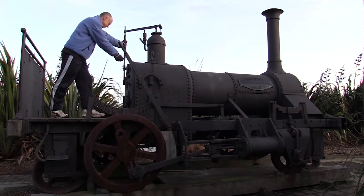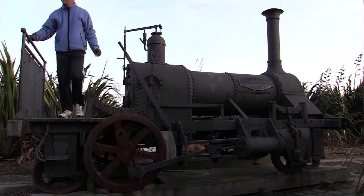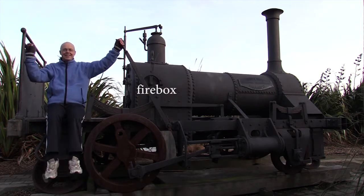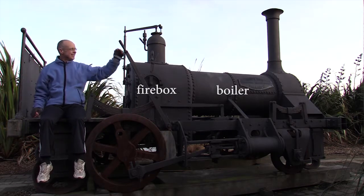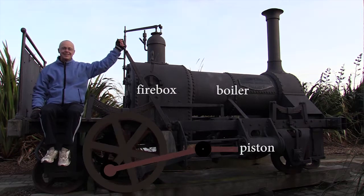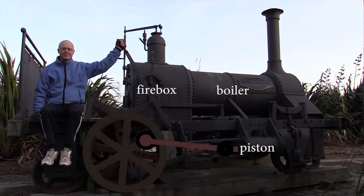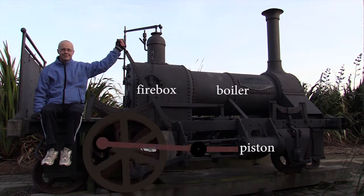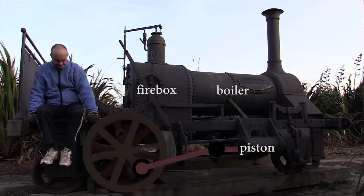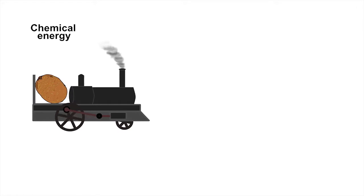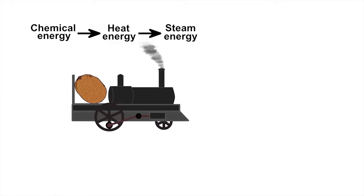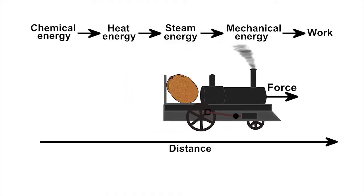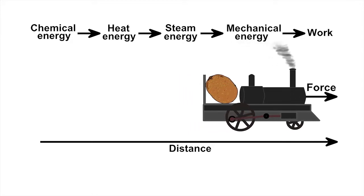Here I am playing on Lady Barkley, the first steam locomotive in New Zealand. Fuel in the form of wood or coal was burned in Lady Barkley's firebox, which heated liquid water into superheated steam in her boiler. This water vapour expanded, pushing the pistons that moved the rods that turned the wheels, providing the driving force to pull heavy objects along the railway tracks. So we have the energy stored in fuel being converted into heat energy and steam energy, and then into the mechanical energy of the moving parts of the locomotive, which could be used to do the work of pulling objects from one place to another.